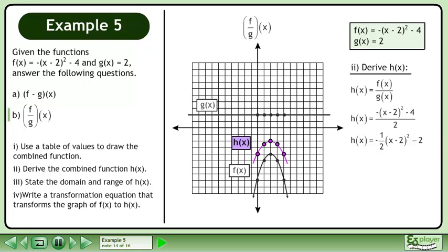Replace f with -(x-2)² - 4 and replace g with 2. Simplify to get h(x) = -1/2(x-2)² - 2.